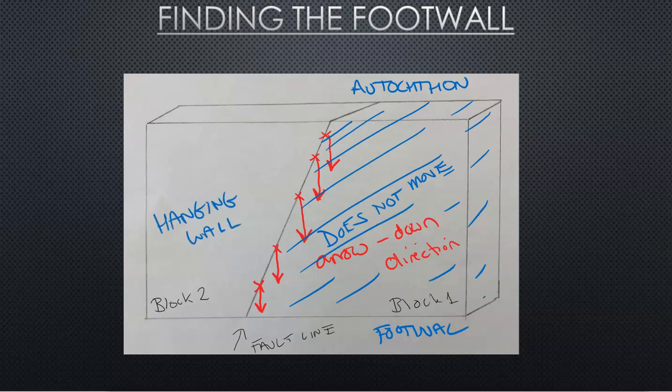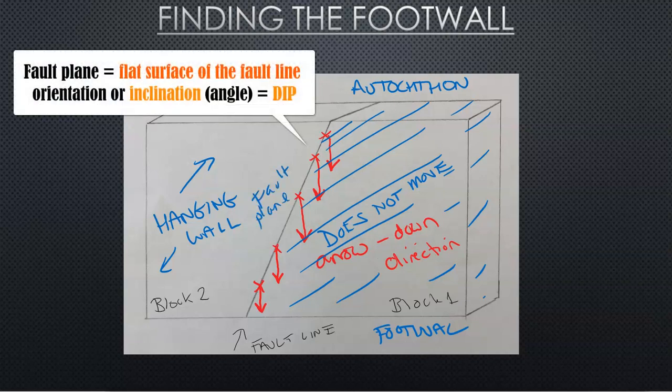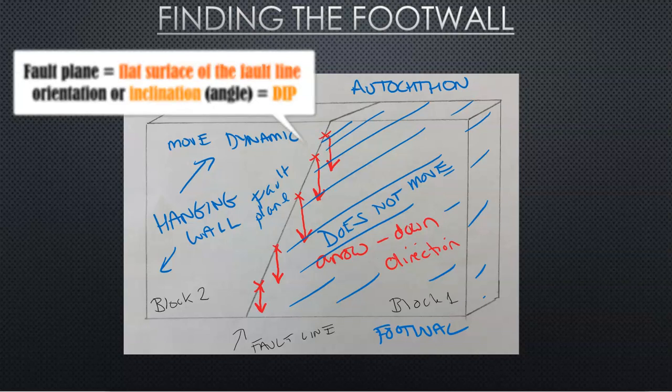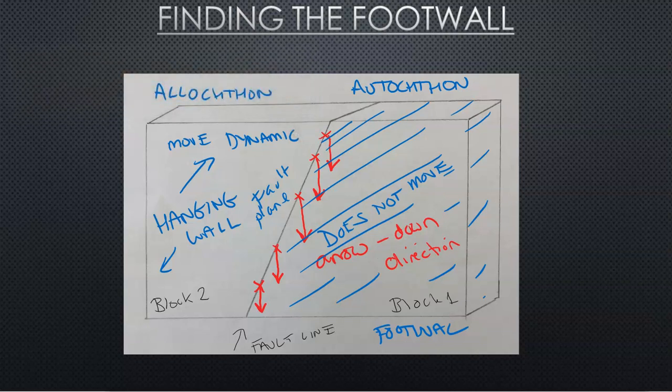Now this one is going to be the one that moves. Now I put an arrow in different directions based on the orientation of the fault plane, which is right here. Fault plane is that flat surface that denotes there's movement either side and the fault line. The hanging wall is going to move. It's going to be dynamic. And this is also the allocthon. So we have established the footwall and hanging wall using the arrows, using the fault line, the fault plane to figure out which one's the footwall and which one is the hanging wall.